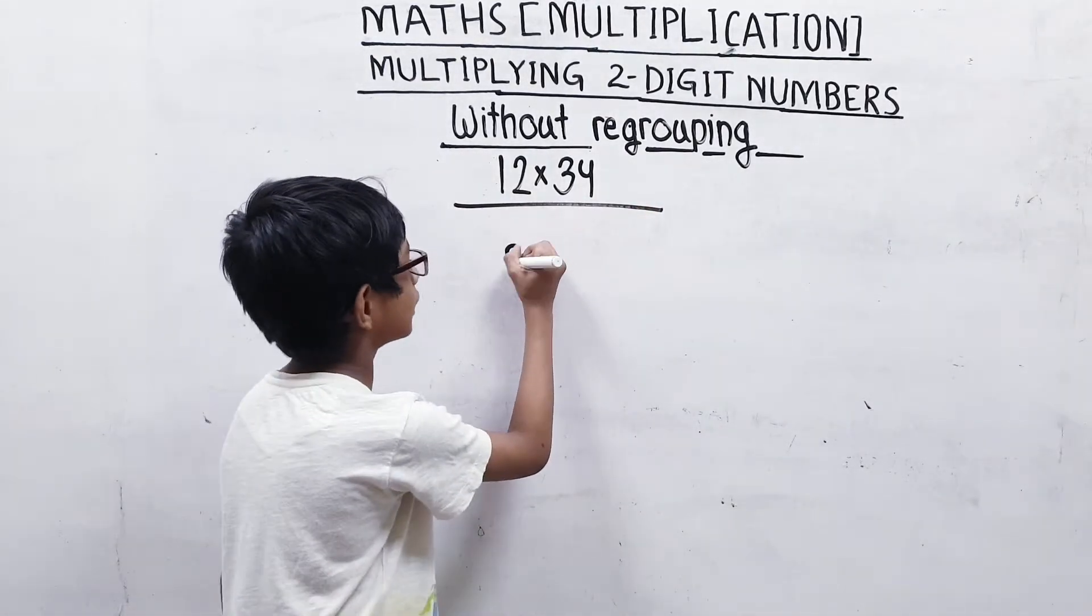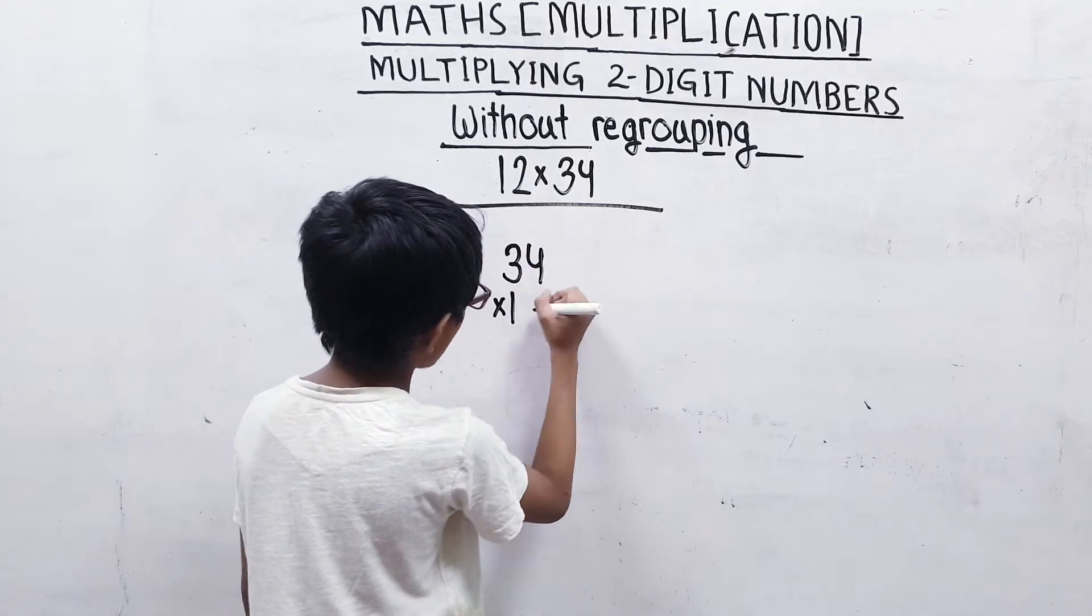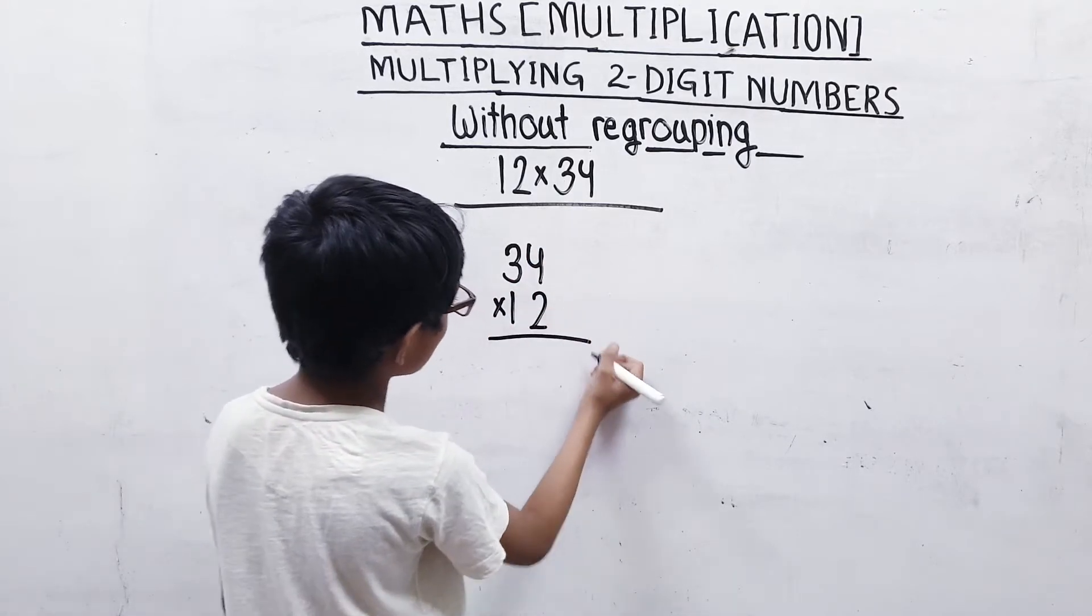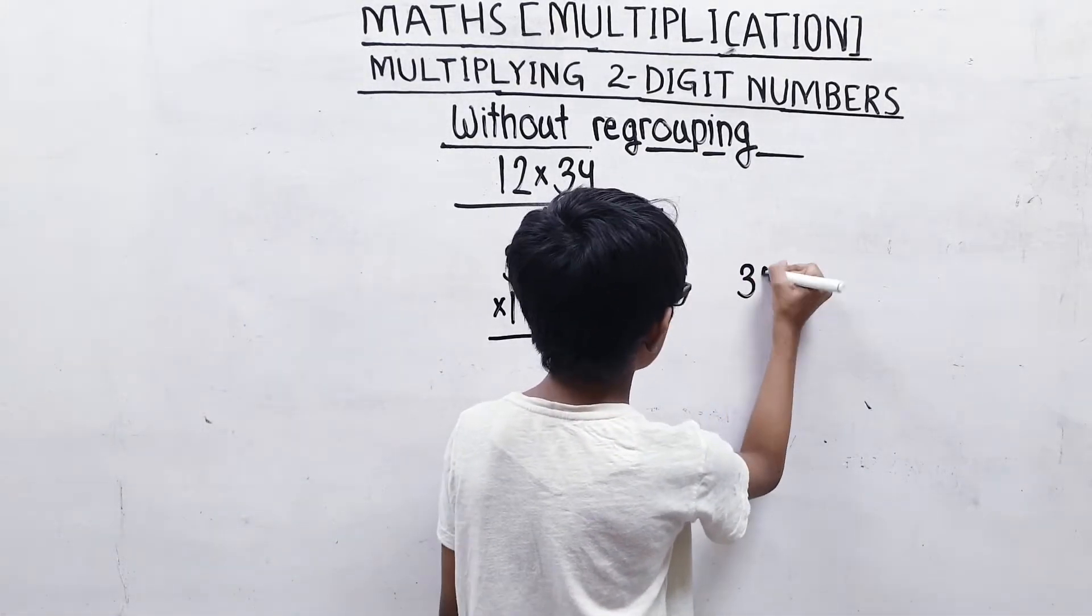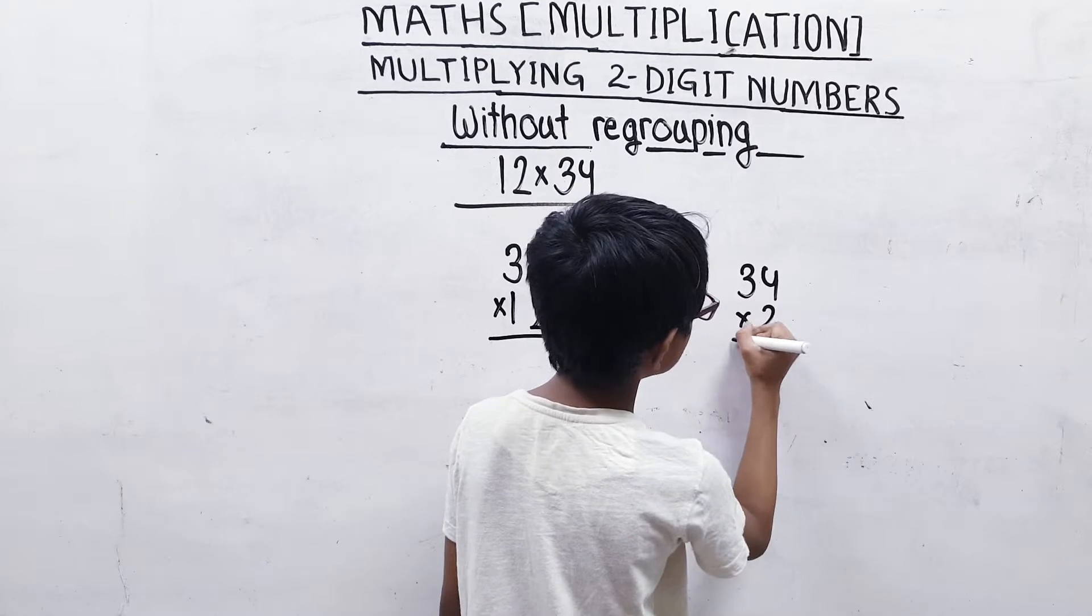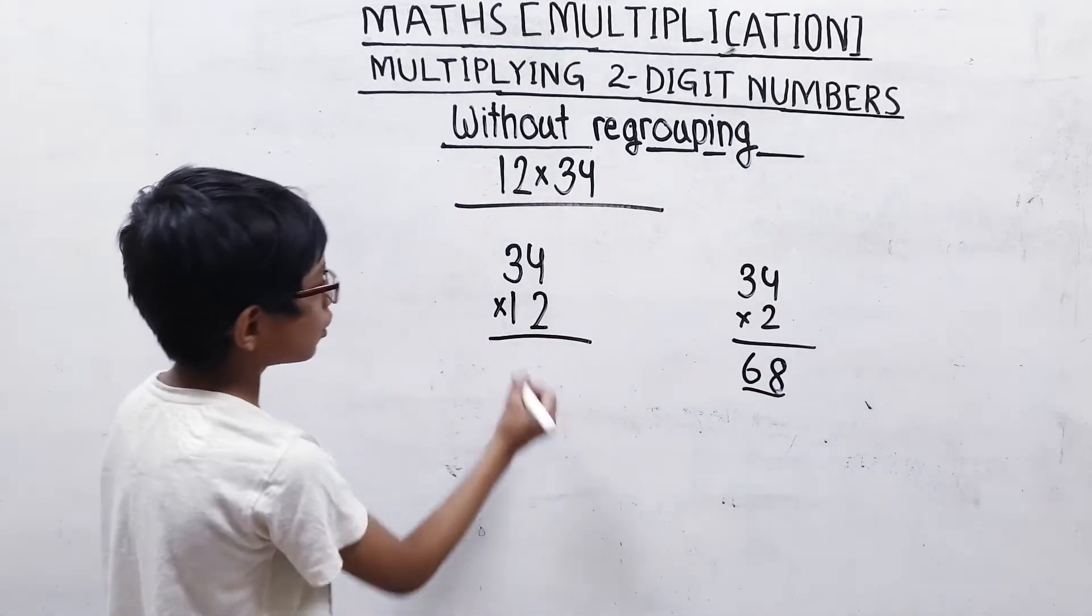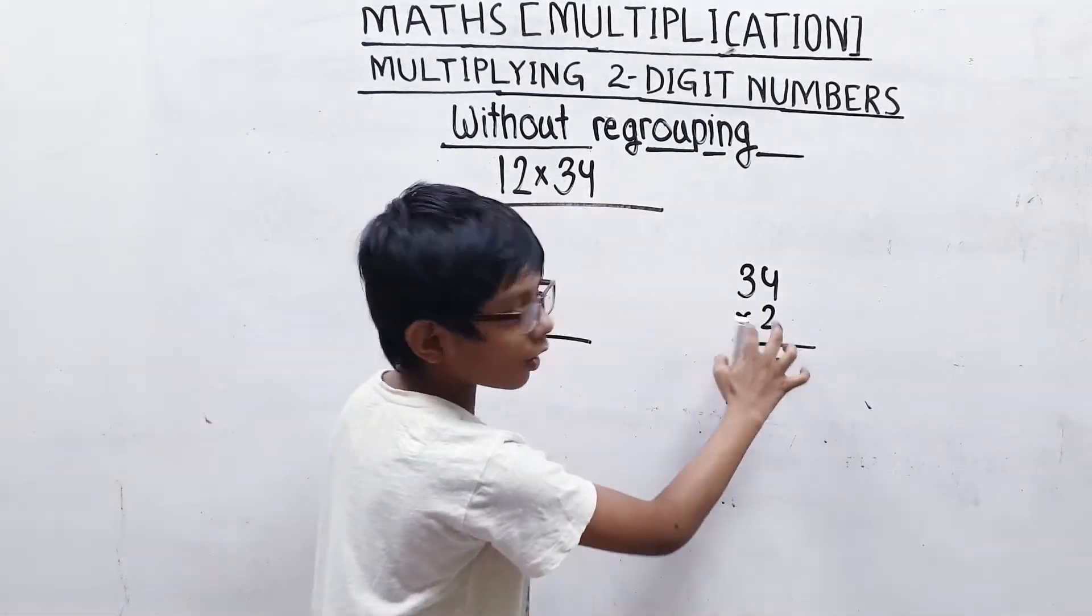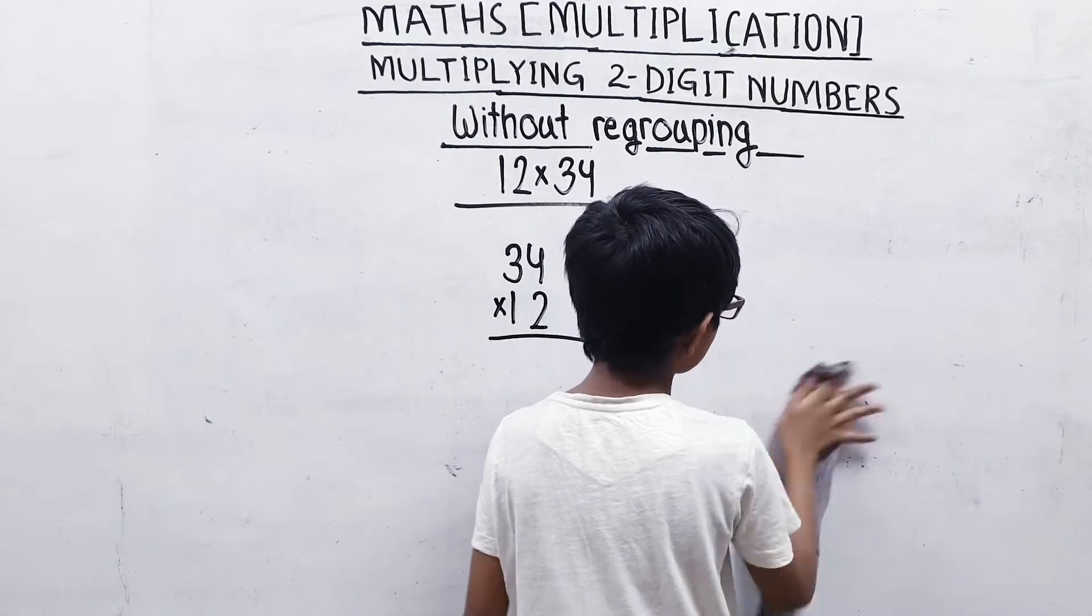We will multiply it like this: 34 multiply by 12. But we will not multiply it the same way as 34 multiply by 2, which gives 4 times 2 is 8, and 3 times 2 is 6. We will not multiply it like this because here are two numbers and here is only one number. So we will multiply it in a different process.